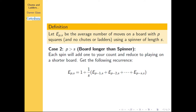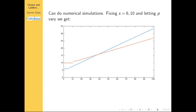On the other end, if the board is longer than the spinner, you get a nice recursive relationship. The expected number of turns is 1 plus, with probability 1/s each, the expected value for a board of length p minus 1, p minus 2, and so on — so you can think of it as being on a shorter board. We have initial conditions and a recurrence, so you can do numerical simulations and compute it exactly.